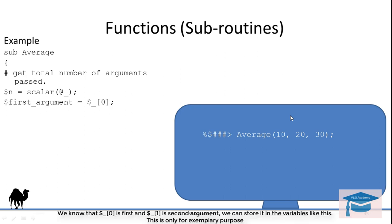Here, we know that $_[0] is first and $_[1] is the second argument. We can store it in variables. This is only for exemplary purposes.